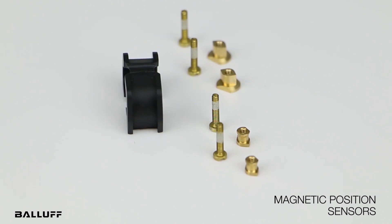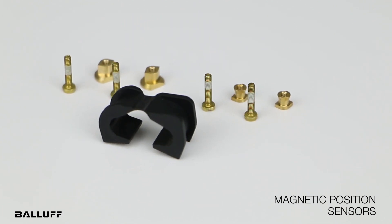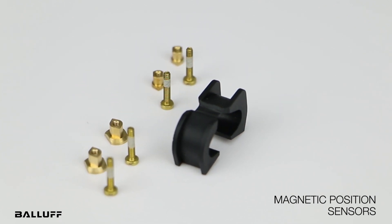Thanks to a universal housing and adapters which are sold separately, these can be easily integrated and mounted onto a wide range of cylinders including C-slot, T-slot, round, or tie rod.